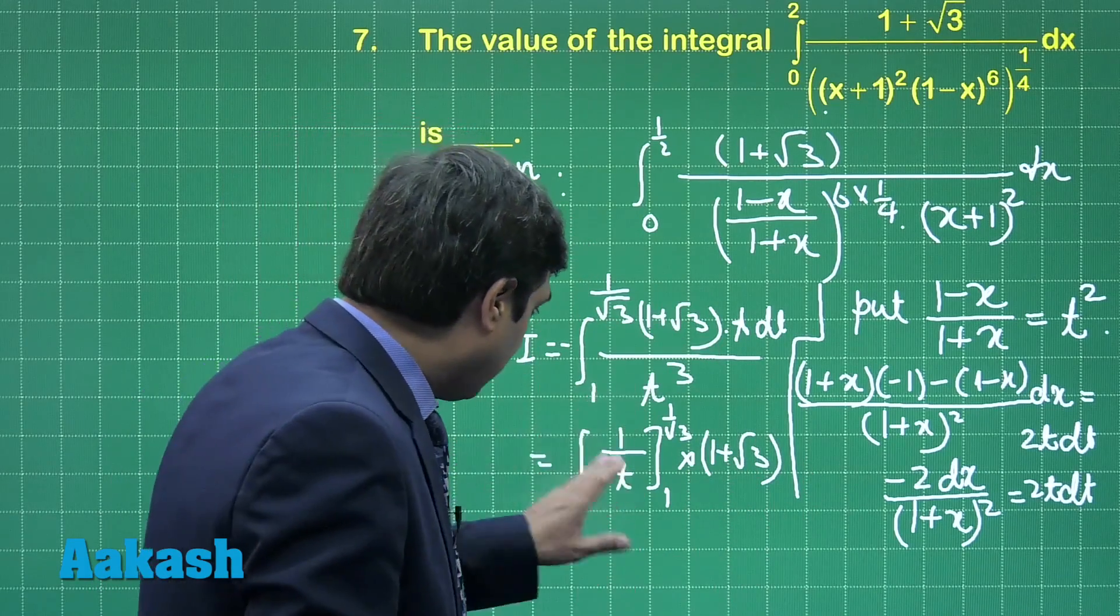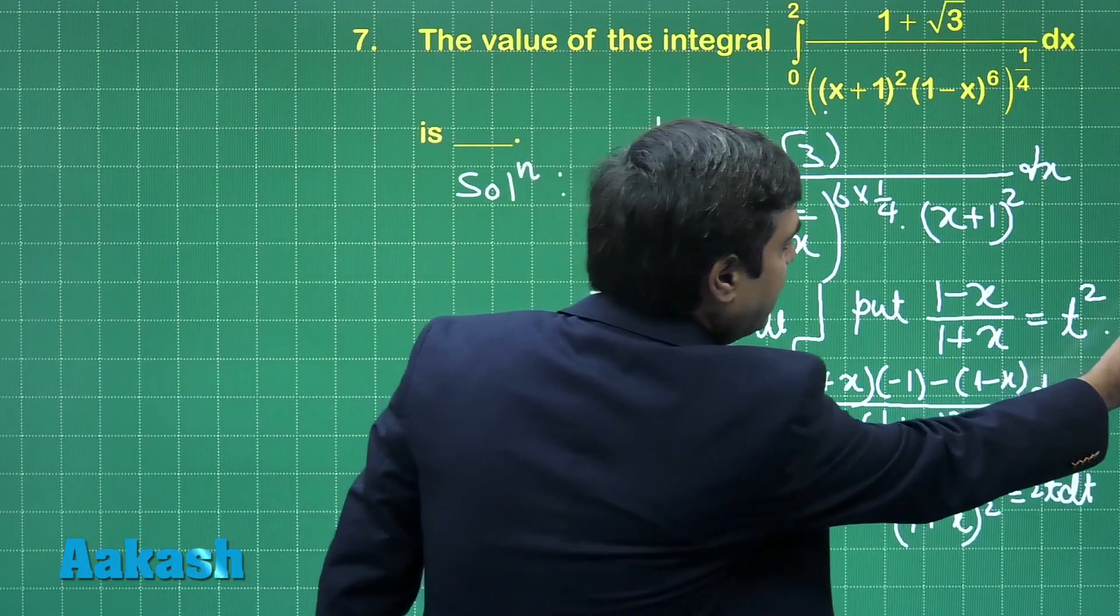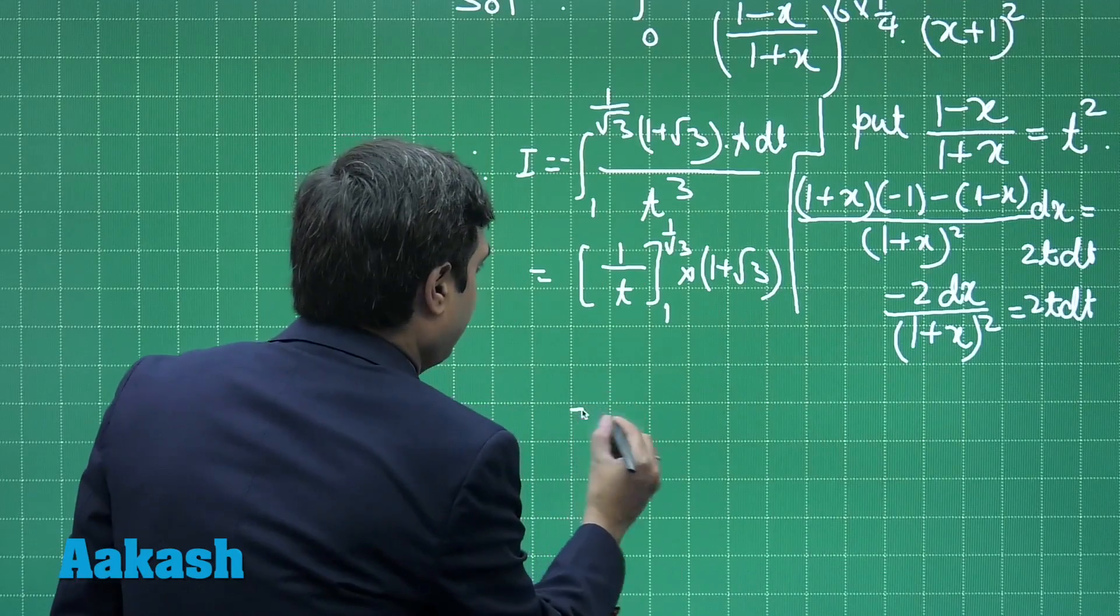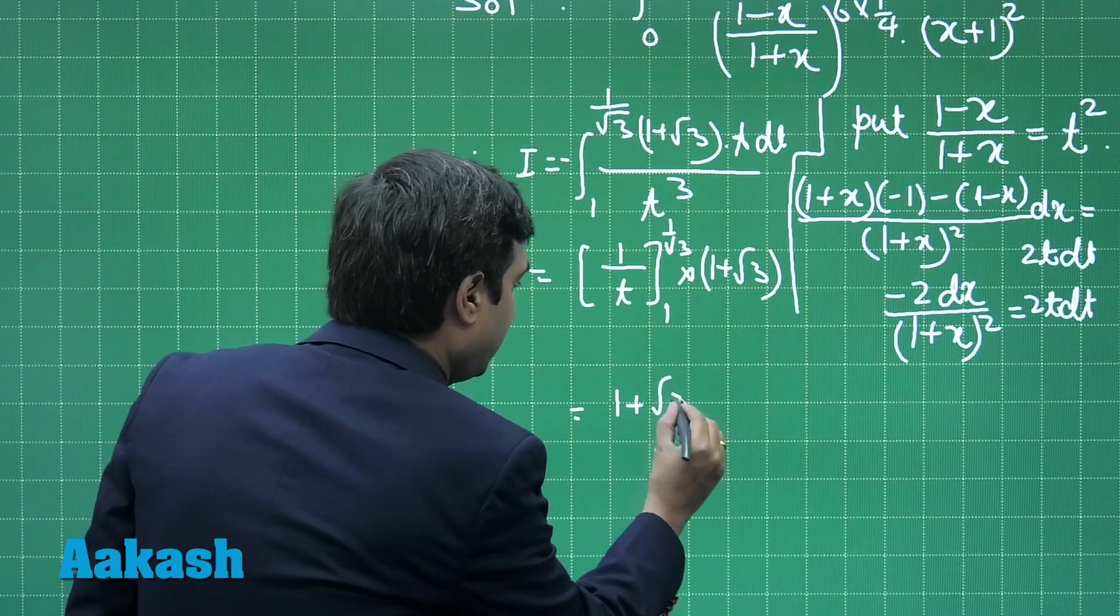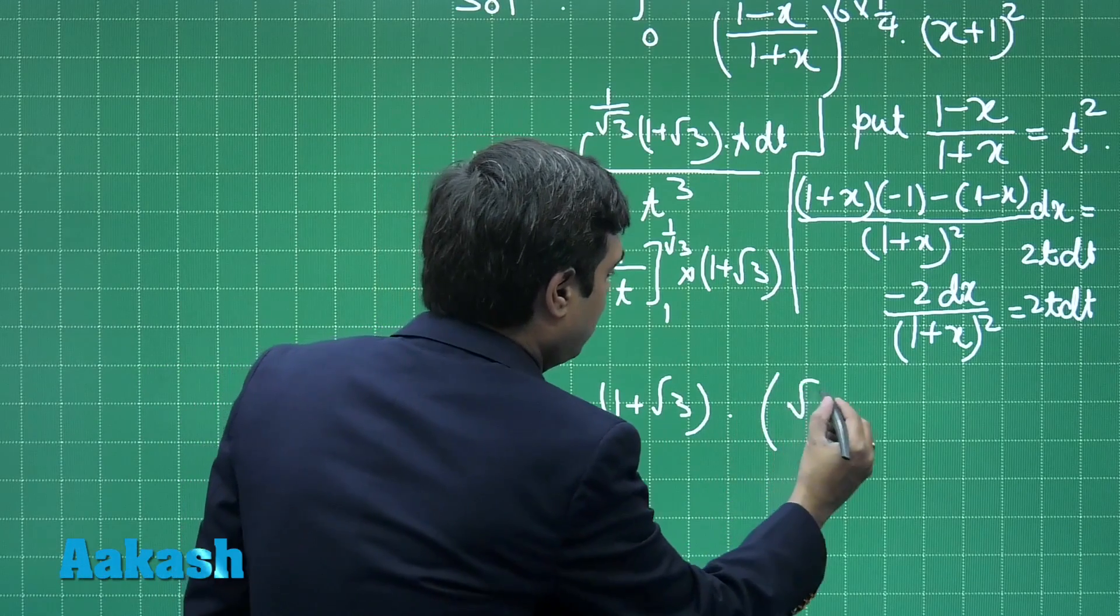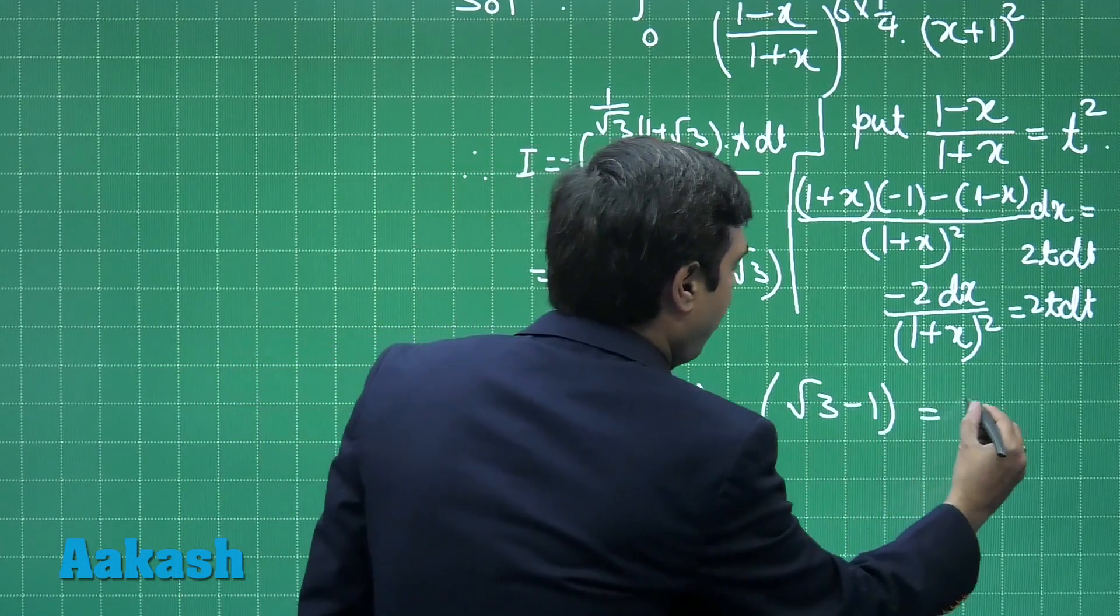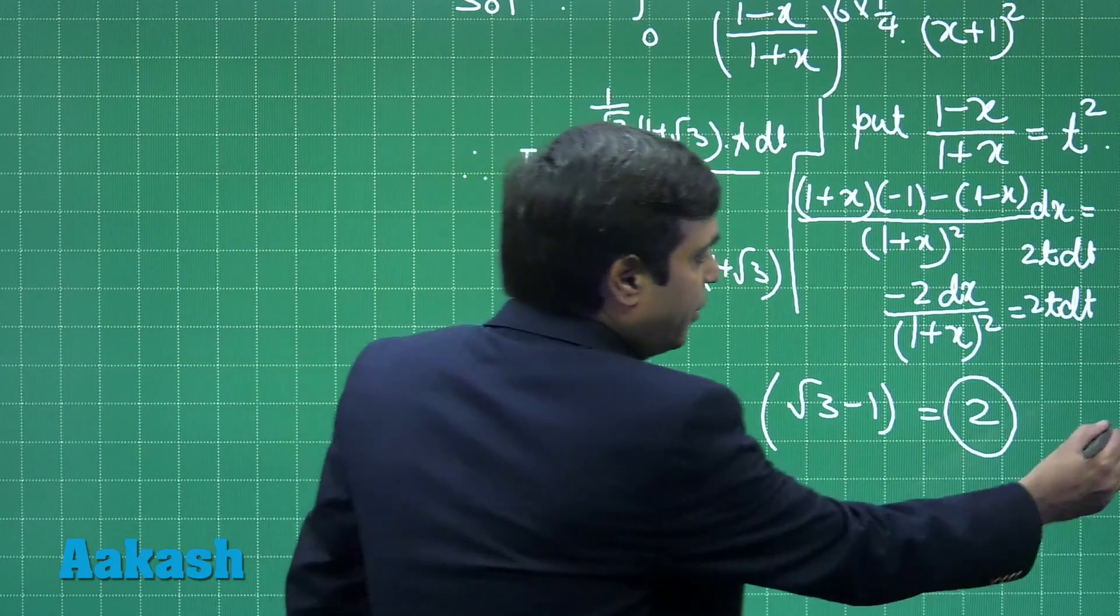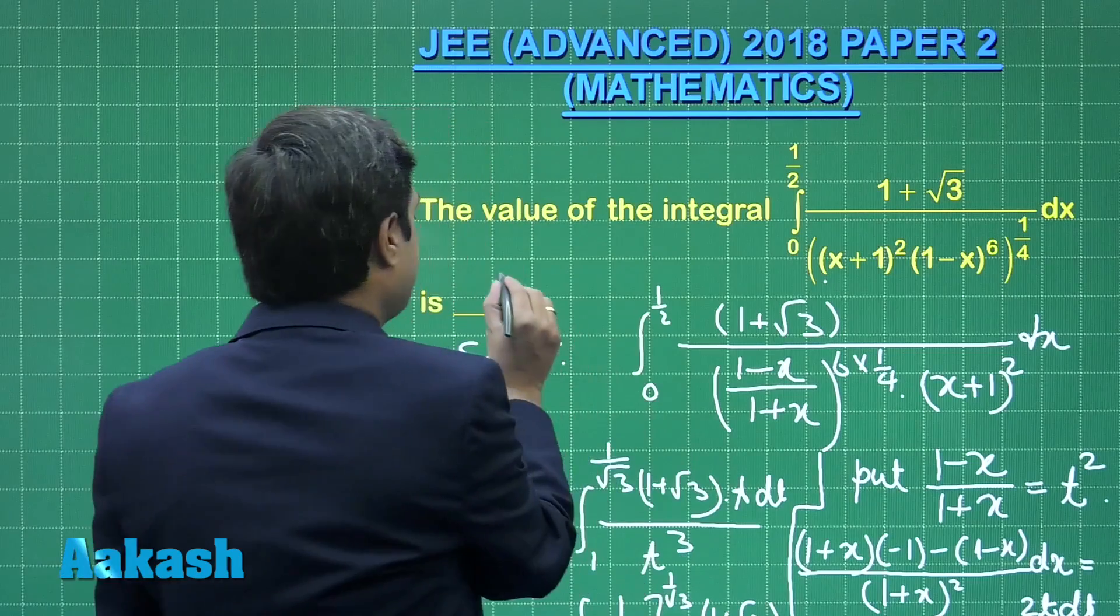When you substitute the values over here, you observe the result as (1 plus root 3) multiplied with (root 3 minus 1), or simply 2. So this is clear. The answer for this question comes as 2.